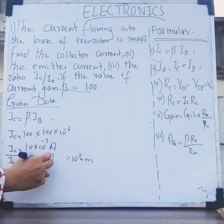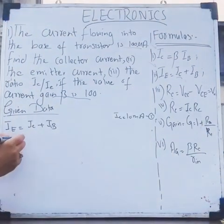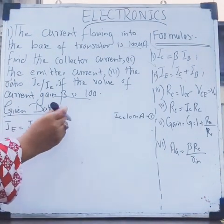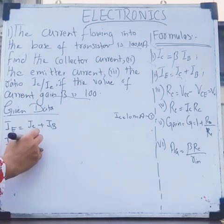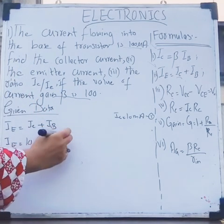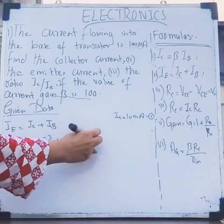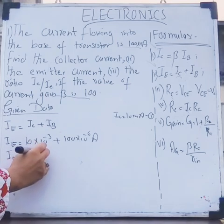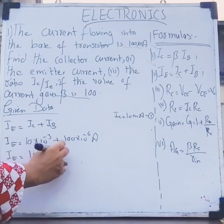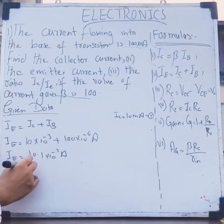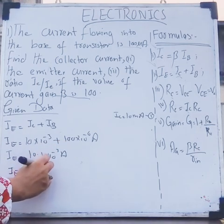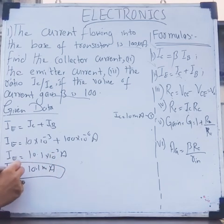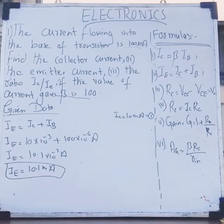Let's use formula number two for calculation of emitter current. We have Ic which equals 10 milliamperes, calculated in the first part, which is 10 times 10 to the power minus 3, plus Ib which is 100 times 10 to the power minus 6 amperes. After calculation, I get 10.1 times 10 to the power minus 3 amperes, or Ie equals 10.1 milliamperes. That is the answer for the second part, the emitter current.